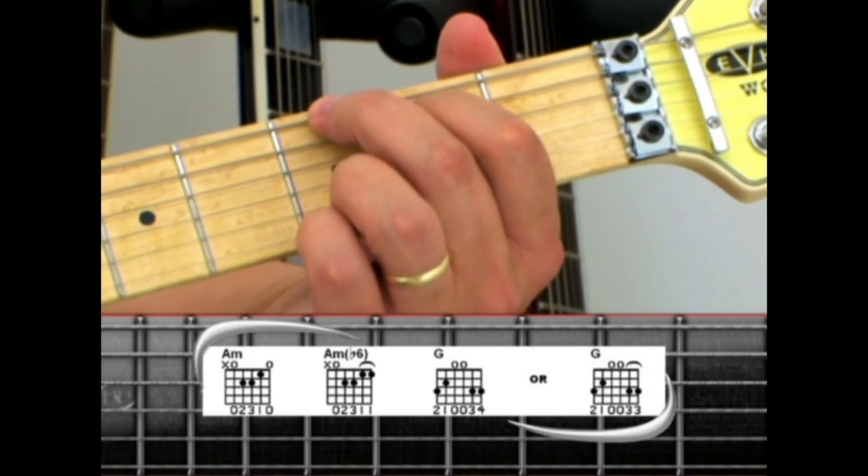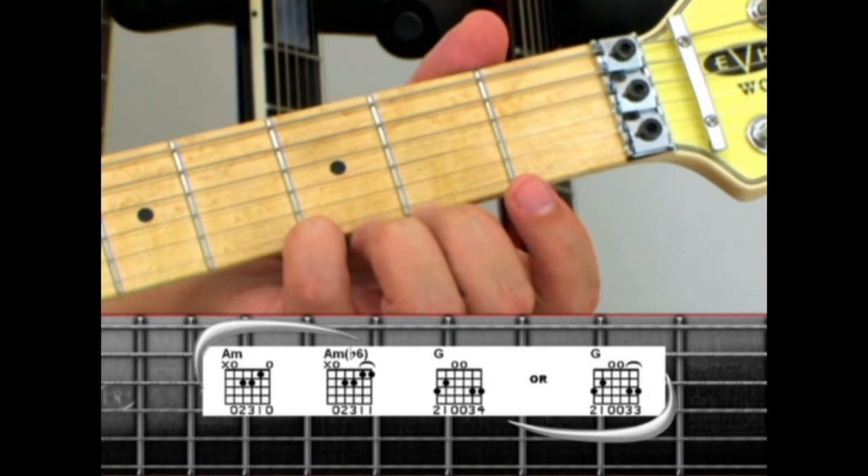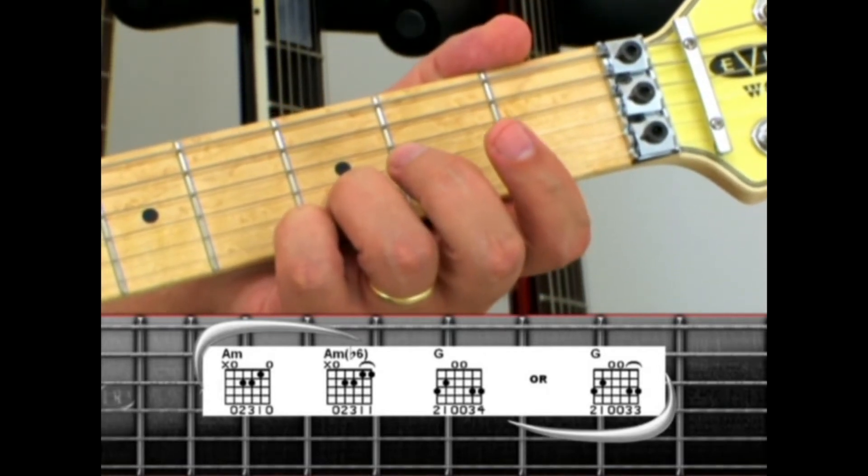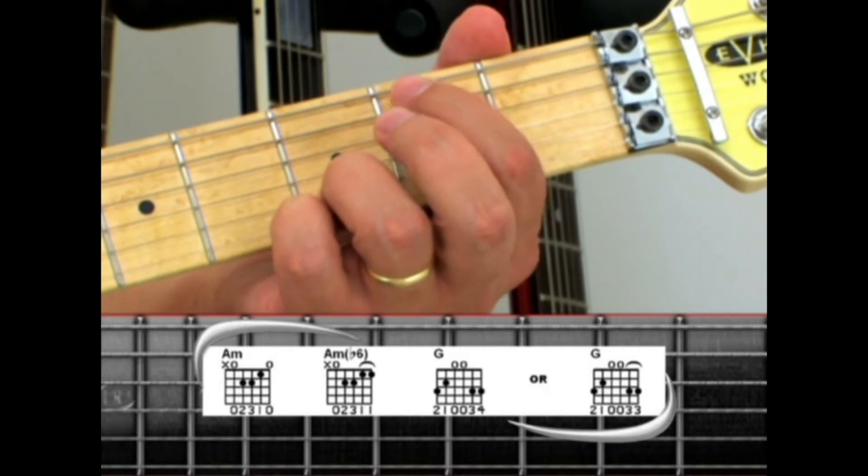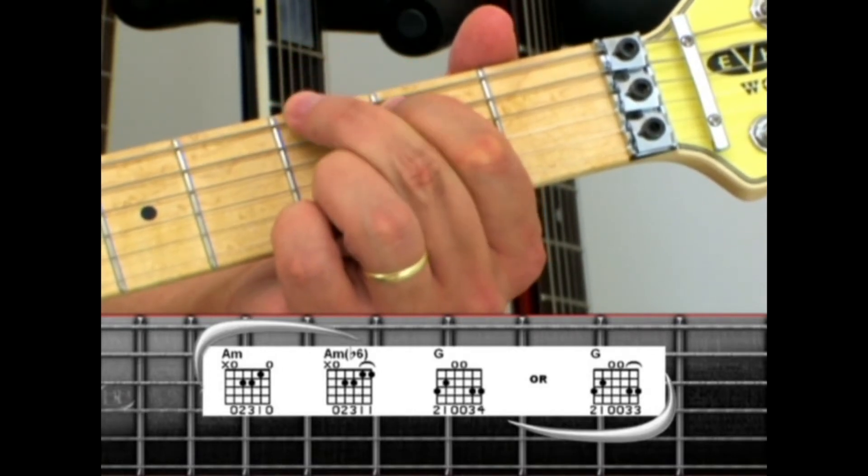Next is the G chord: first string third fret with the pinky, second string third fret with the ring, third and fourth strings are open, index finger on the fifth string second fret, and middle finger on the sixth string third fret.